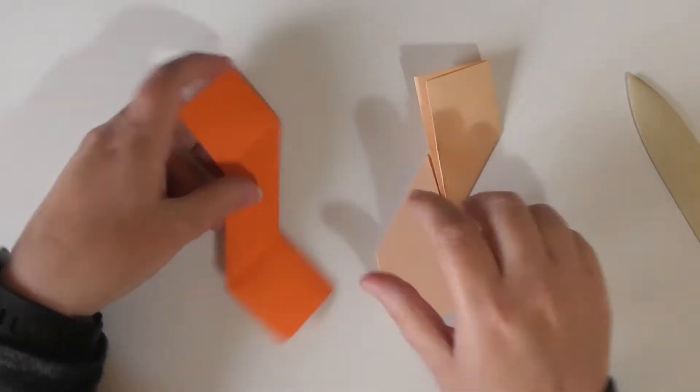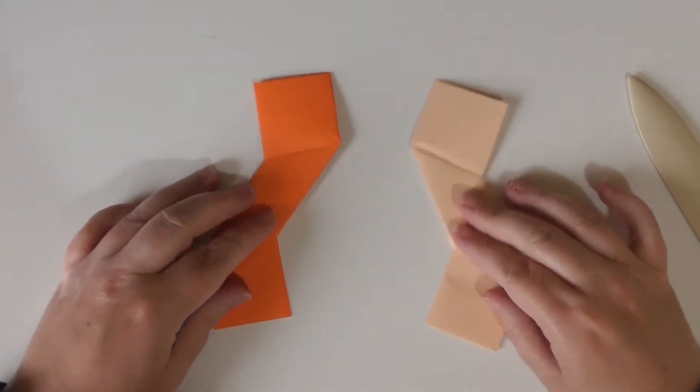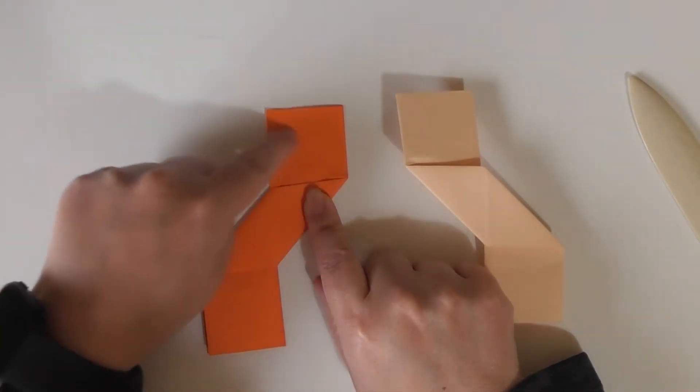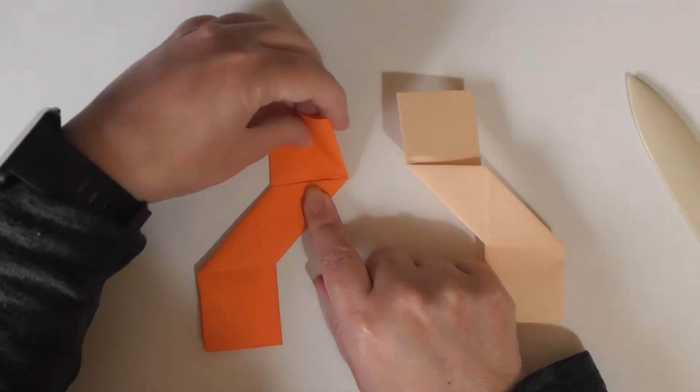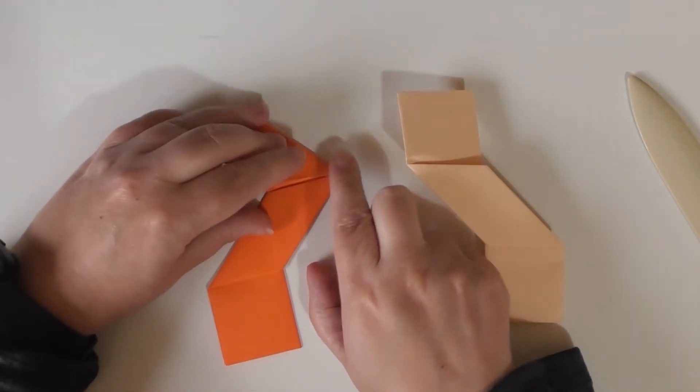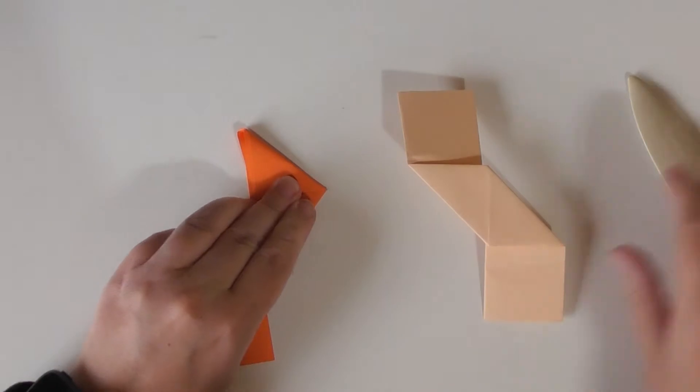Now we're going to turn them over. So we have it that way round. And we're just going to fold in a triangle across this line. Just pop them along.